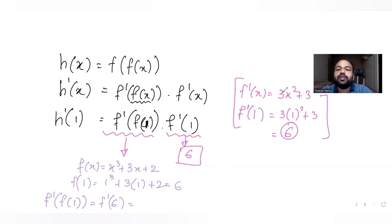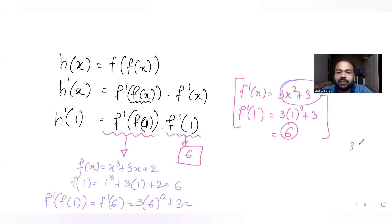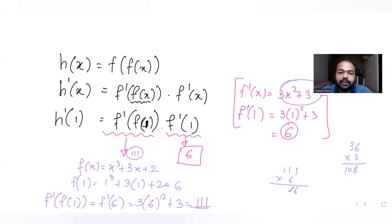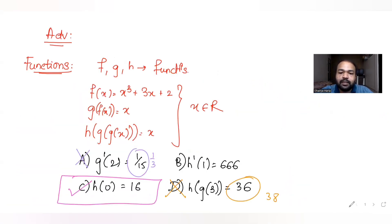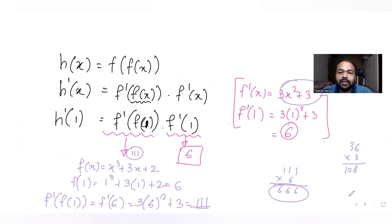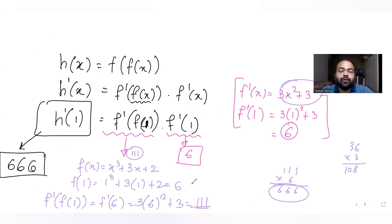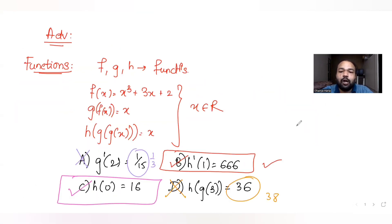Now f'(f(1)) = f'(6). Putting x = 6: f'(6) = 3(36) + 3 = 108 + 3 = 111. So h'(1) = f'(6) · f'(1) = 111 × 6 = 666. The option says h'(1) = 666, which is correct. So option B is also a correct answer.